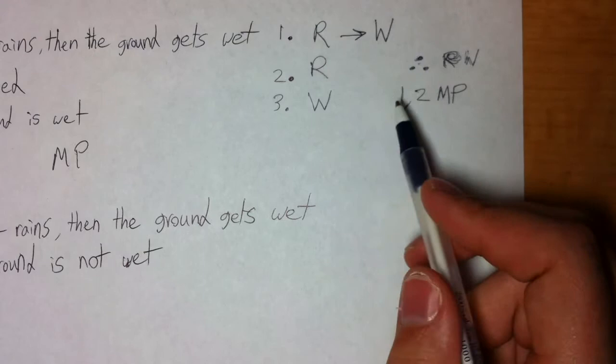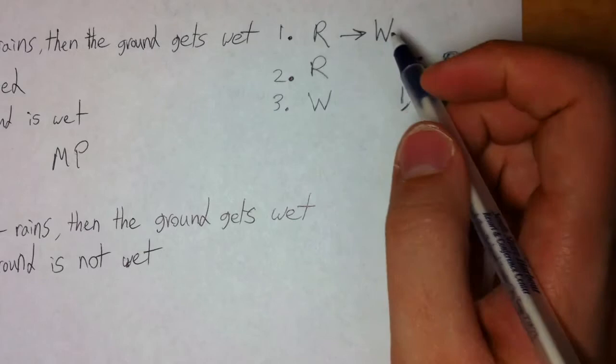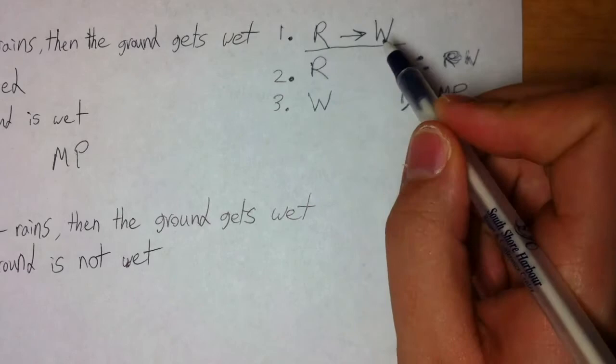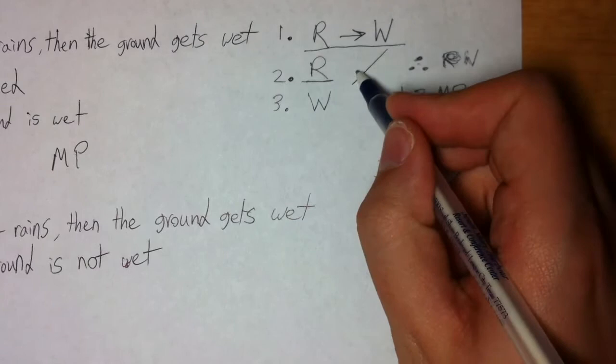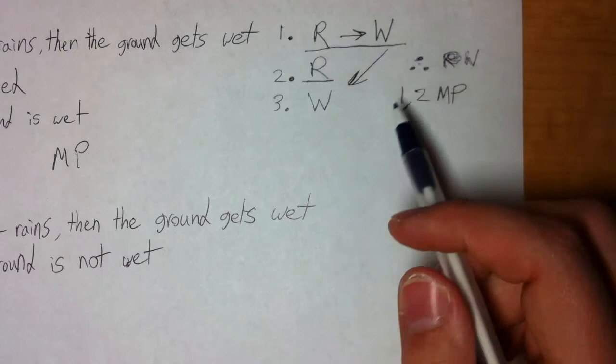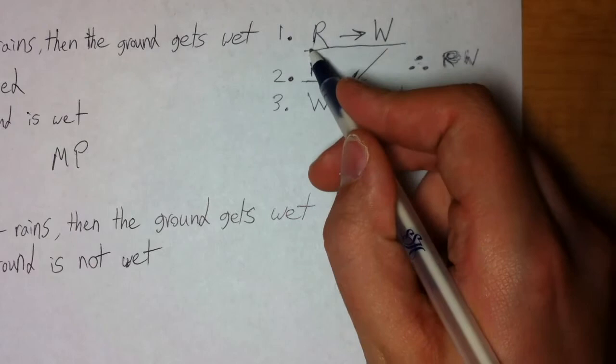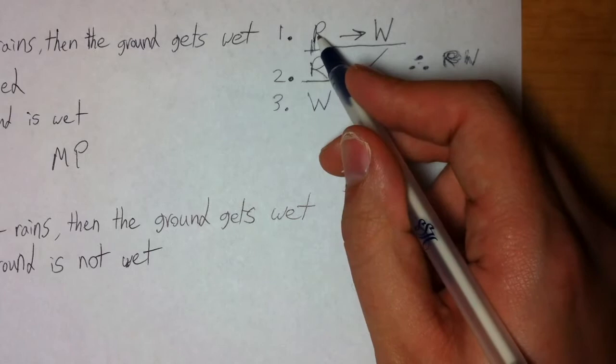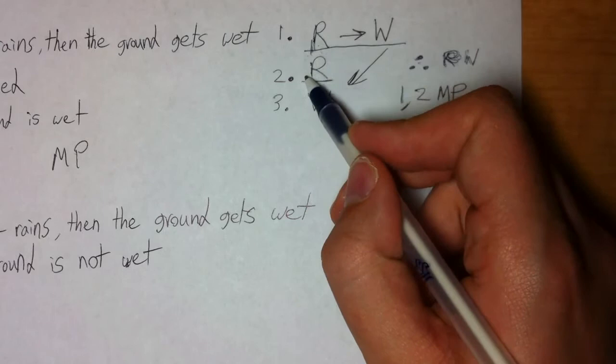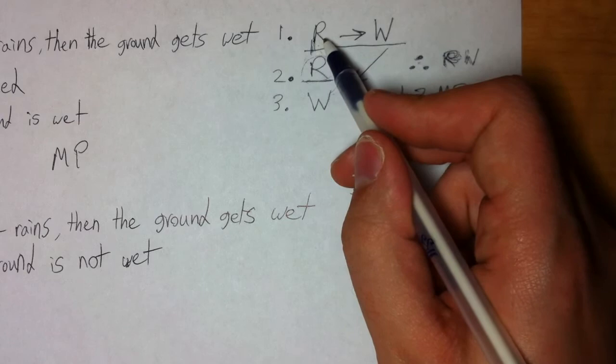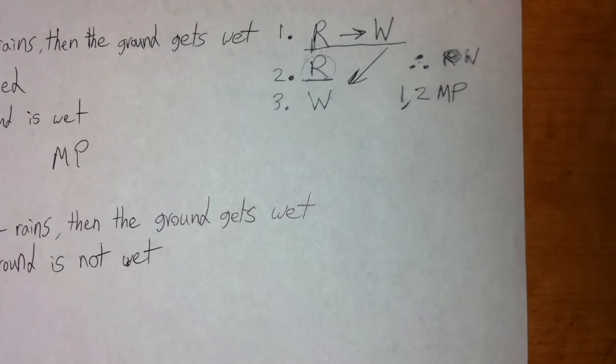Modus ponens is a two-line rule every single time. It's an arrow rule every single time. What you're looking for is a pattern: in this case, you're looking for an arrow, and you're looking for the left side of the arrow. If you have that, then you can get the right side of the arrow. It doesn't matter which of the two lines comes first. The one-sentence rule for modus ponens is: if you have the left side of the arrow, you can get the right side of the arrow. If you know the antecedent of a conditional, you can get the consequent. We have the left side here on line two, so we're able to get the right side of that arrow. That's our first rule — modus ponens.